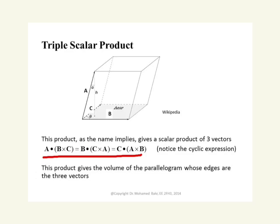This expression can be done in three different ways using a cyclic expression. The order does matter. So A dot B cross C, or you take B dot C cross A, or C dot A cross B — it's going in a cycle. And this will give you a number which is really the volume of this parallelepiped.